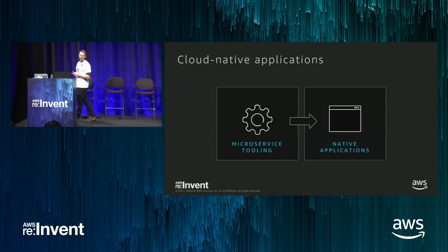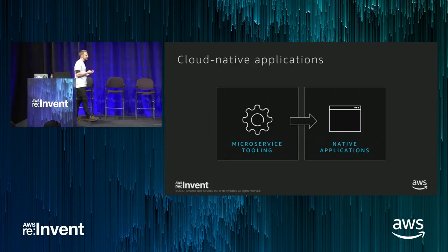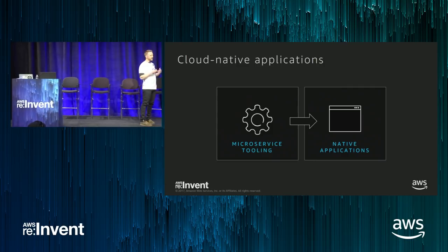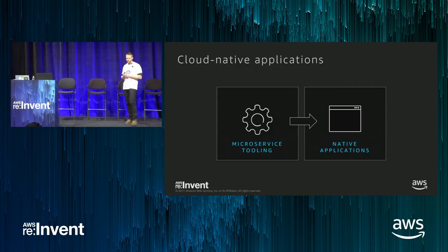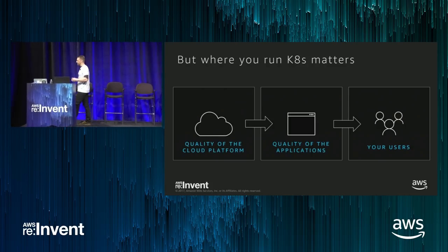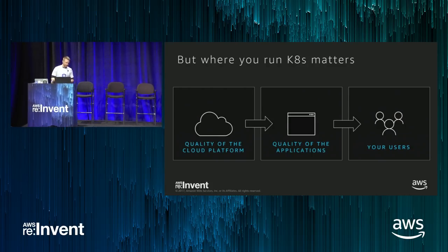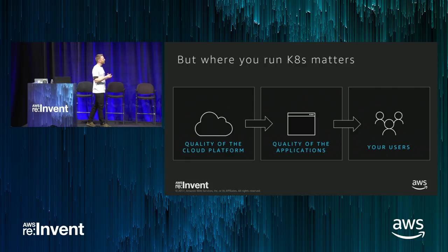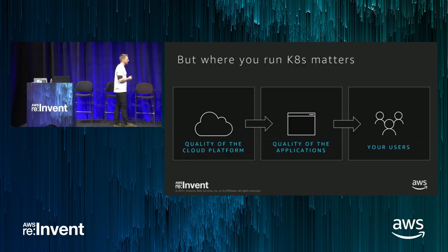At the end of the day, Kubernetes and all the functionality packaged here are the building blocks for cloud-native applications. Where you run Kubernetes actually does matter, because the quality of the underlying platform — things like speed, stability, scalability, and integrations — all impact how much work you have to do in building an application on Kubernetes and how much you have to build yourself.